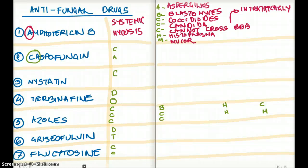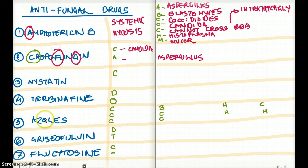Moving on to caspofungin. It starts with C. We must use it for candida. What about A, aspergillus? Okay, we use it for these two fungus. What about the mechanism of action? Caspofungin inhibits beta-glucan. The G for glucan, the G also for GI upset. Another toxicity is flushing. So that's caspofungin.